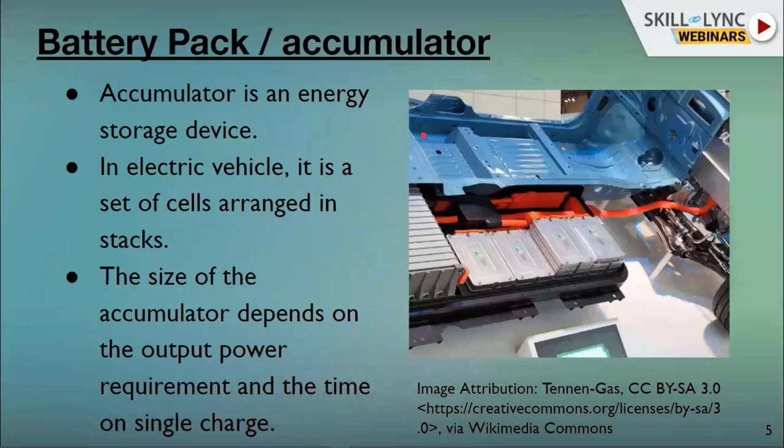The first component in all electric powertrain systems is the accumulator, or battery pack. An accumulator in general is a storage of energy — even a fuel tank can be called an accumulator. Any component that stores energy is called an accumulator. In electric vehicles, the batteries store energy in the form of DC.